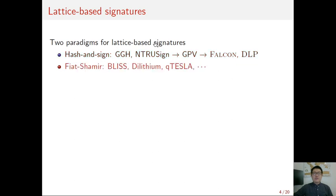The other paradigm for lattice signatures is Fiat-Shamir. In this family, there are also many efficient proposals like BLISS, Dilithium, qTESLA.